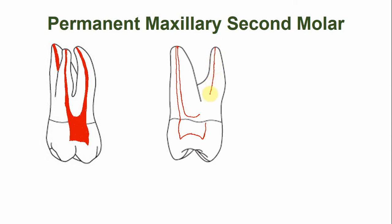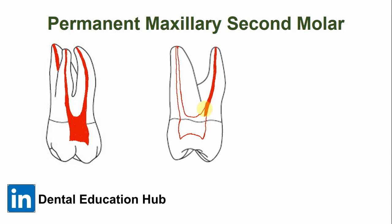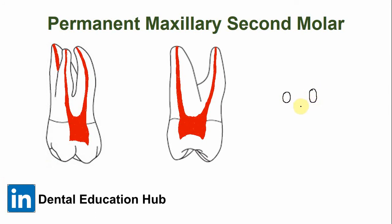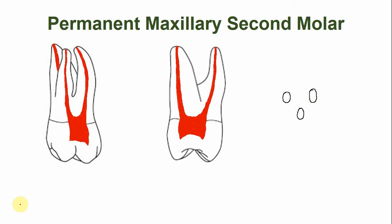This is the palatal canal. In the mid-root cross-section, this is the disto-buccal root, this is the mesio-buccal root, and this is the palatal root. In this view, they are very close to each other.